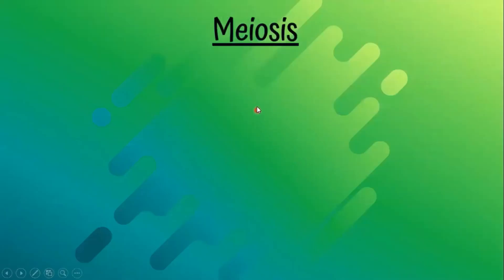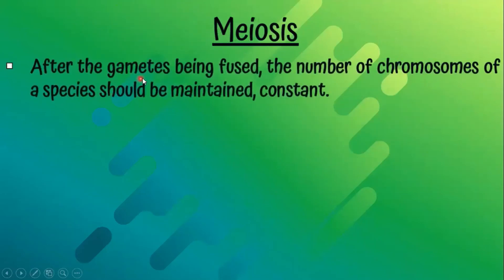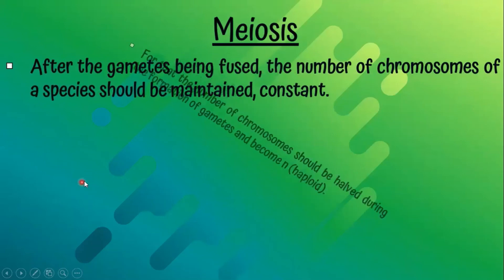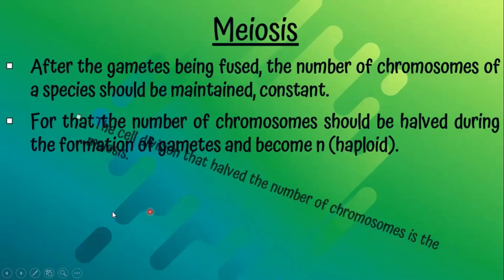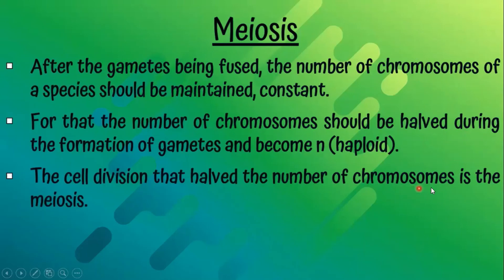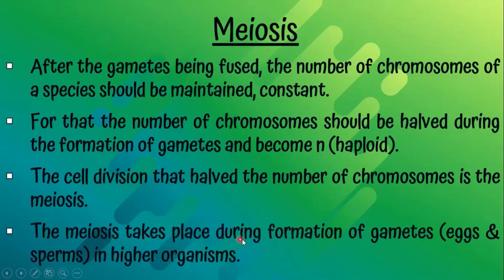Now let's talk about meiosis. After the gametes are fused, the number of chromosomes of the species should be maintained constant. For that, the number of chromosomes should be halved during the formation of gametes, becoming N — that means haploid. The cell division that halves the number of chromosomes is meiosis. Meiosis takes place during the formation of gametes — eggs and sperms — in higher organisms.